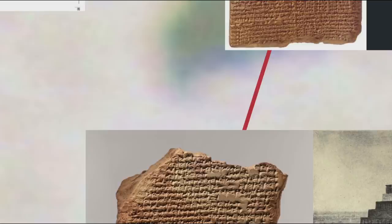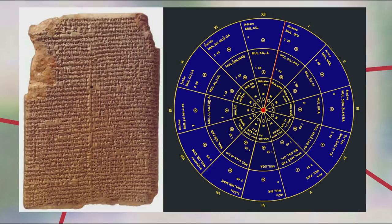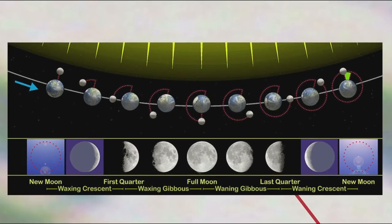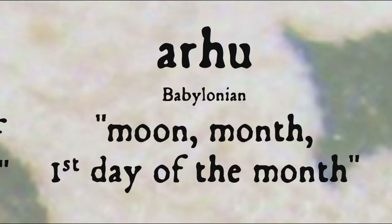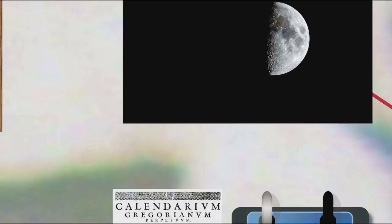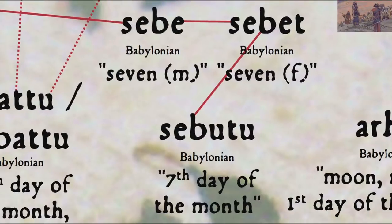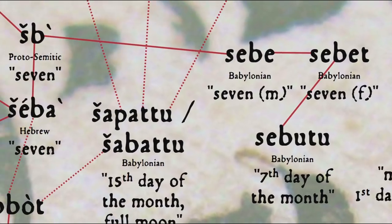All of this is relevant to the word Sabbath because of those evil days in the Babylonian calendar. Technically, these special named days aren't a regularly repeating cycle of seven days like a week, but instead correspond to the phases of the moon. The first day of the month, corresponding to the first sighting of the crescent moon, was called arhu, meaning literally 'moon.' The seventh day, corresponding to the first quarter moon, was called sabutu, derived from the word for the number seven — sebe in the feminine form, sebet in the masculine — from that same Proto-Semitic root.